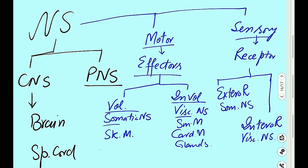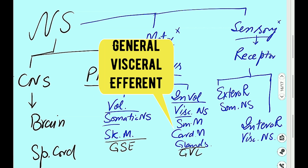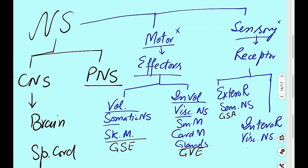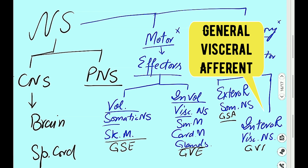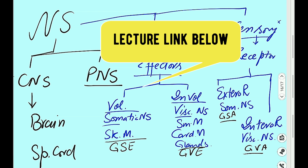So we get four functions of the nervous system — two categories of motor and two of sensory. These four are general functions given specific codes. The skeletal muscle function is labeled as general somatic efferent. The involuntary effectors' function is labeled as general visceral efferent. The function of exteroreceptors is labeled as general somatic afferent. The function of interoreceptors is labeled as general visceral afferent. The detail is given in my lecture about the spinal cord components, with a link available in the description.